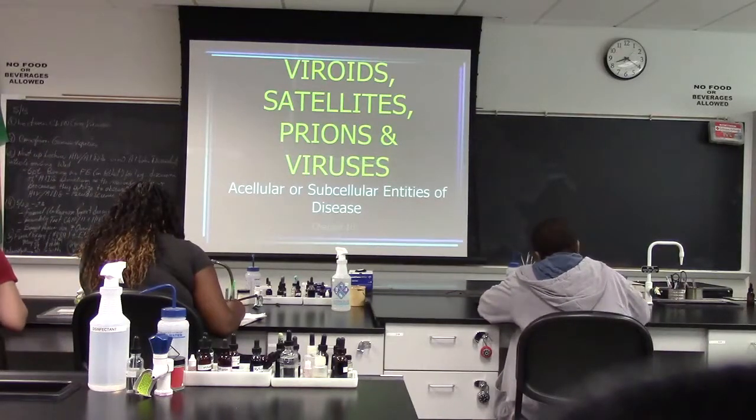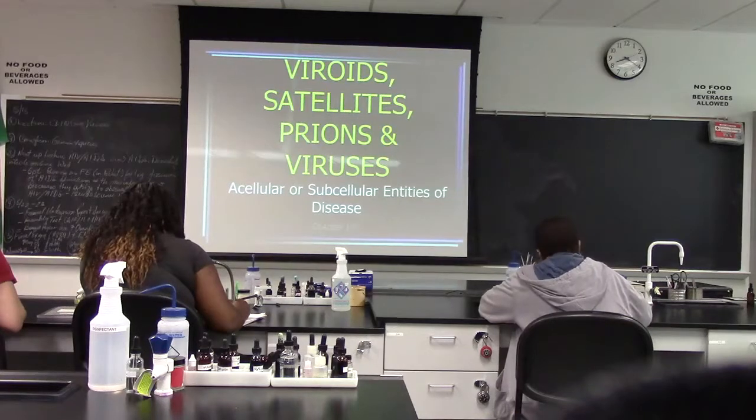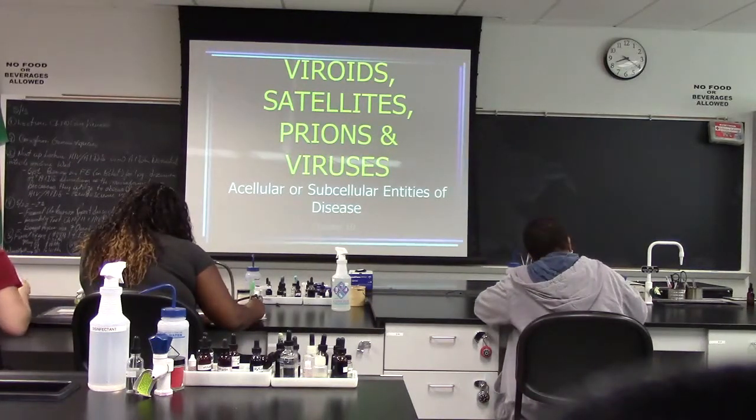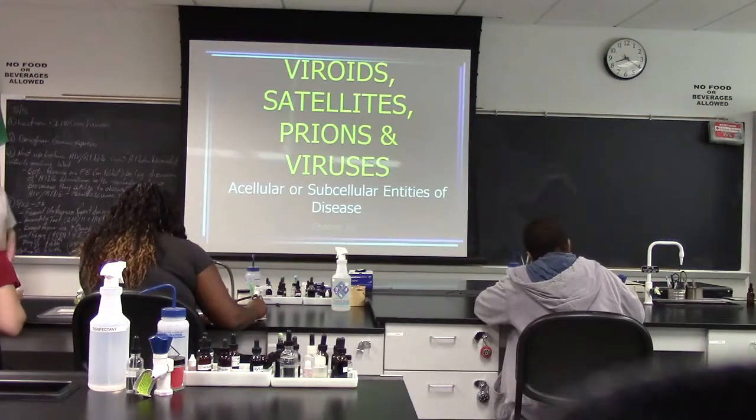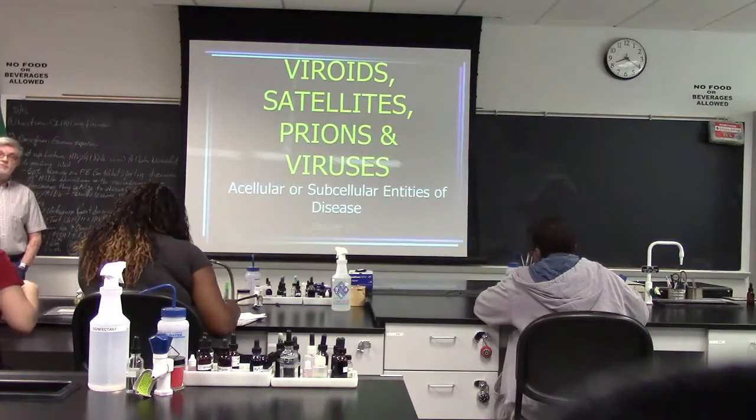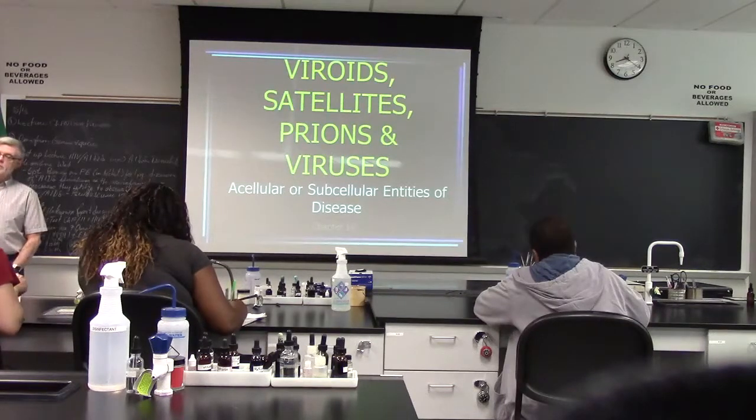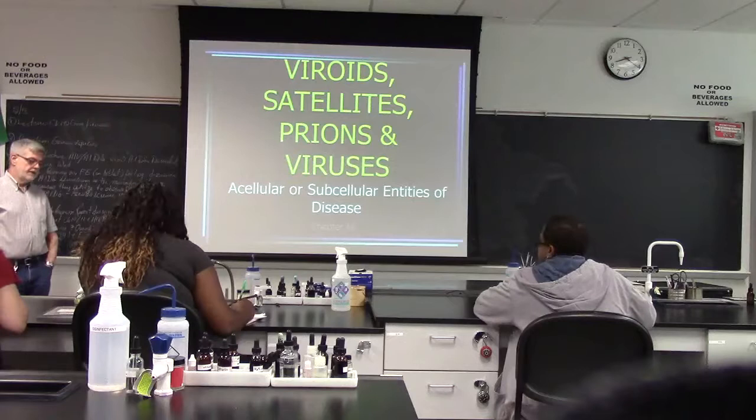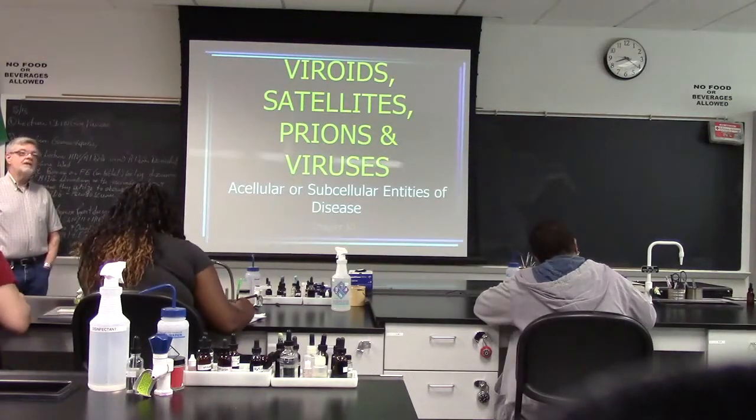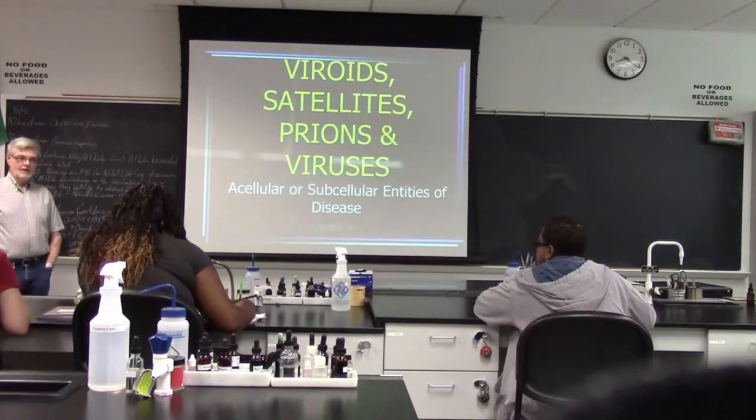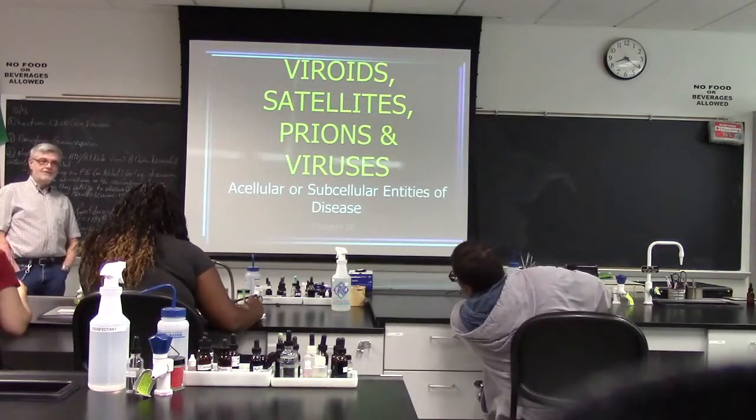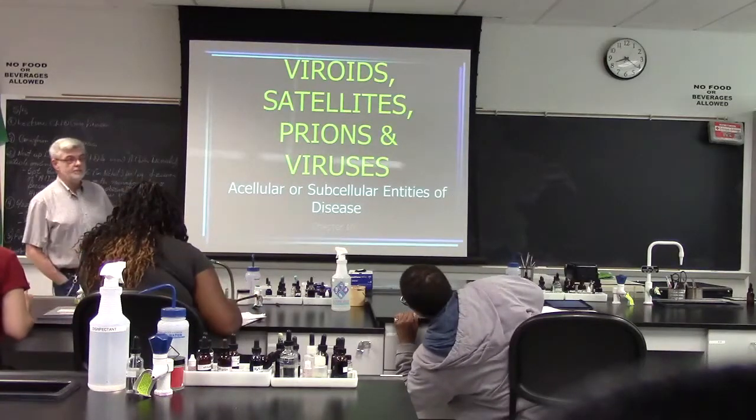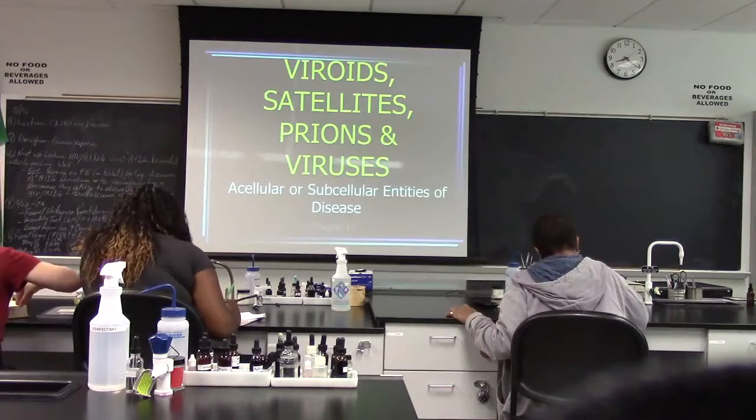So today we're going to fly through the general viruses chapter on acellular parasites. We'll quickly review viroids, satellites, and prions, and then get on to viruses themselves, starting with bacterial viruses called bacteriophage, or phage for short. We'll talk about general characteristics of all viruses and the two different types, RNA or DNA, and then we'll go into certain specific viruses that affect us generally, here in Southern California particularly.